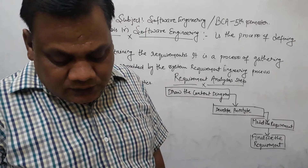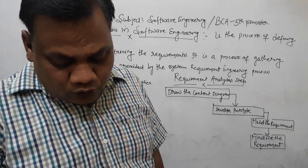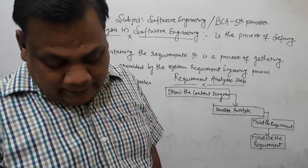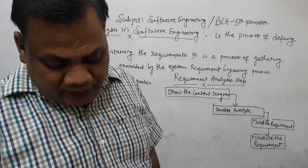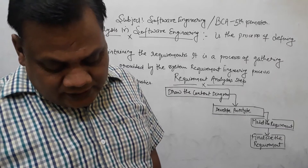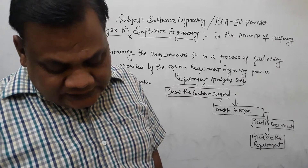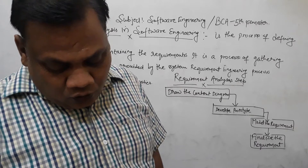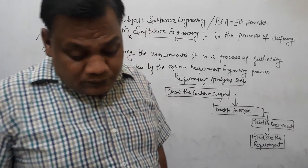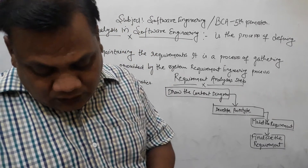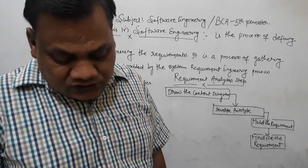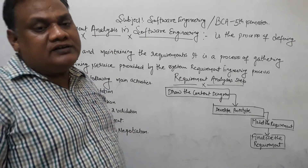Requirement management is done in order to understand the problem the software system is solving. The problem could be automating an existing manual process or developing a new automated system or a combination of the two. The emphasis of requirement analysis is identifying what is needed from the system, not how the system will work.